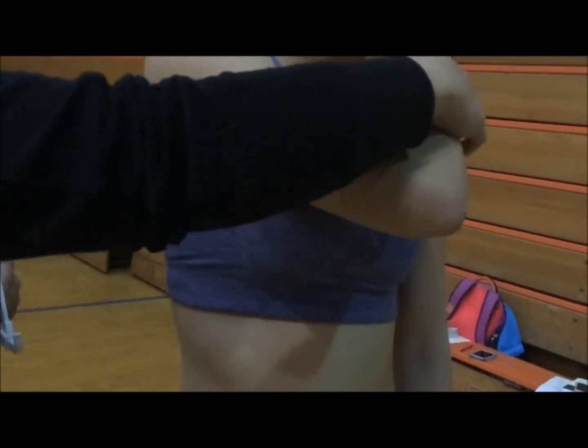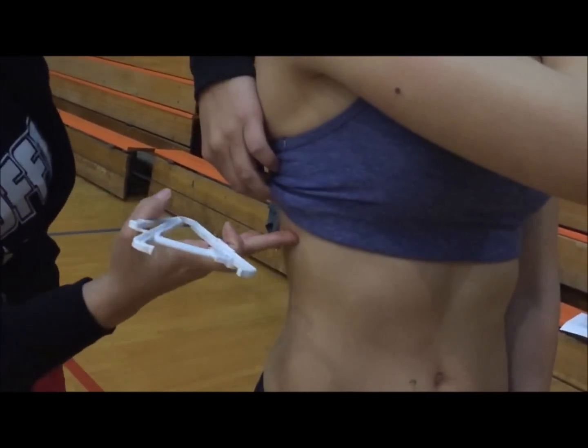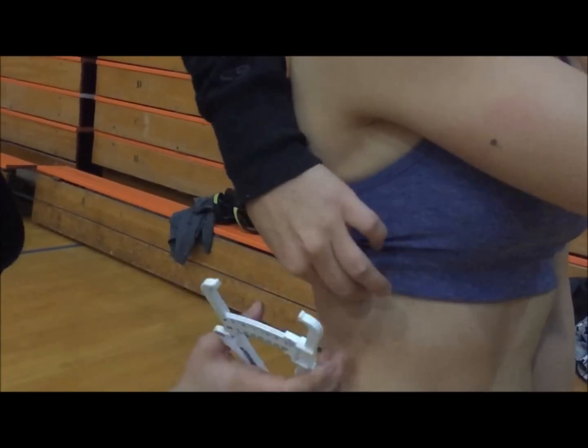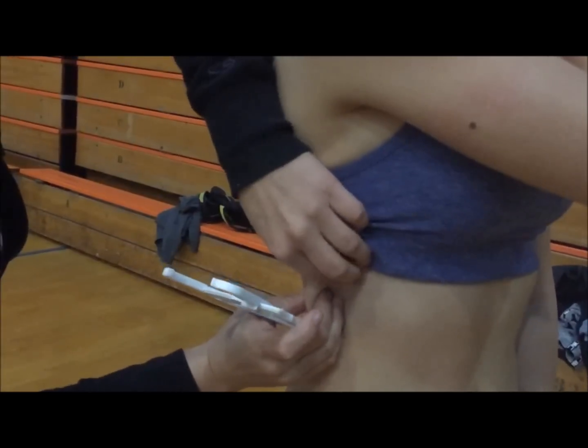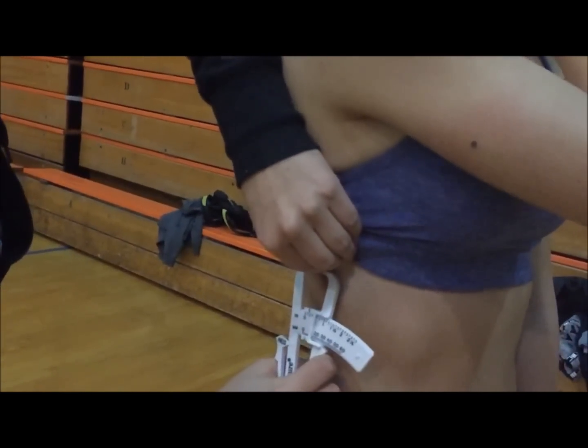Next, we will be doing the mid-axillary. Make sure that you are doing it in the correct place where you have marked and this will be a vertical fold. Pinching away the skin from the muscle and take your measurement.